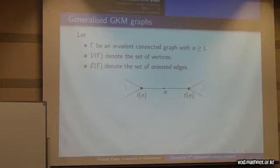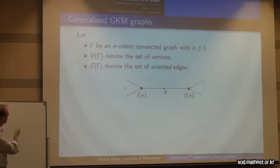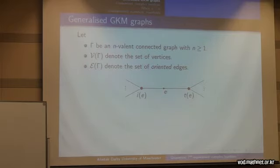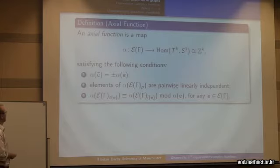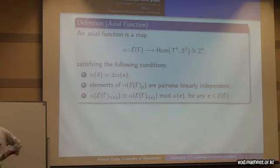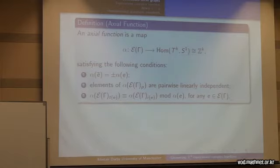We define a slightly generalised GKM graph. We have an N-valent connected graph with vertices denoted V and edges E. We want a set of oriented edges so each edge appears twice in E(Γ) with both orientations. We let i(e) be the initial vertex of e and t(e) be the terminal vertex of e, and we denote Γ_P to be the set of edges emanating out from P. The conditions include an axial function, which is a map from E to the set of irreducible representations.